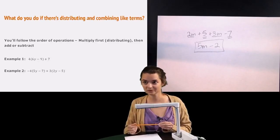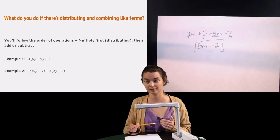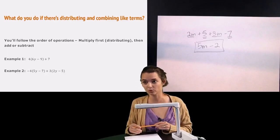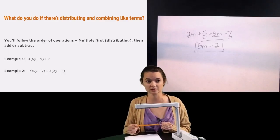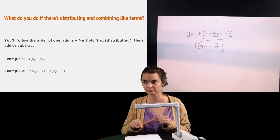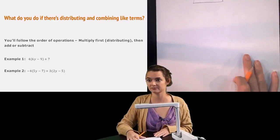What do you do if you have distributing and you have combining like terms all in the same problem? You actually follow the order of operations, which means that you're going to multiply first, which would be doing your distributing, and then you add or subtract.